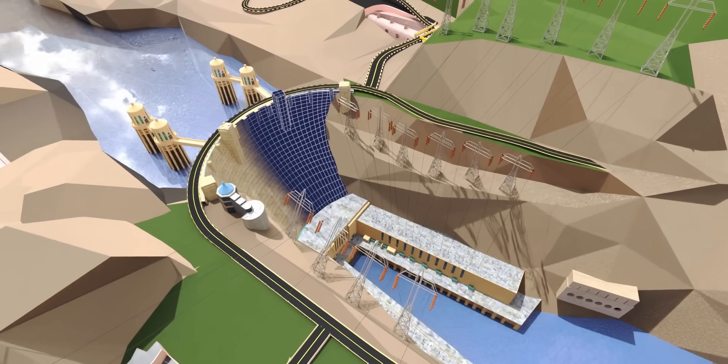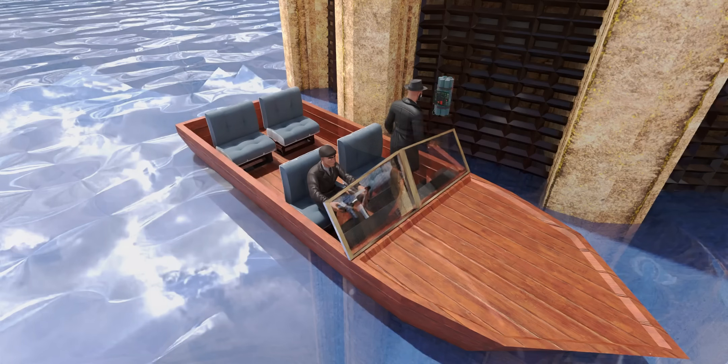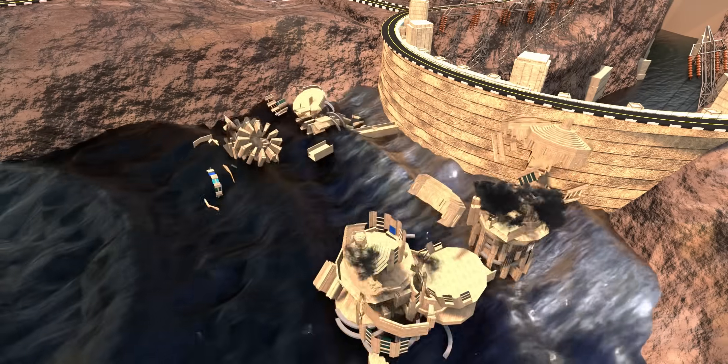Did you know that during World War II, German spies had a plan to destroy the beautiful intake towers of Hoover Dam? What do you think would have happened if their plan had succeeded?